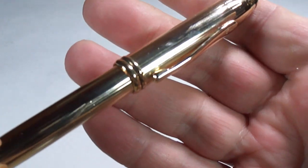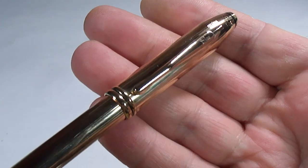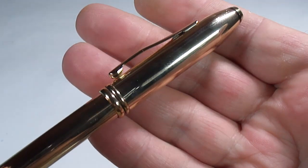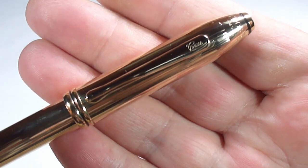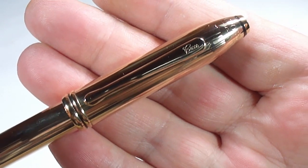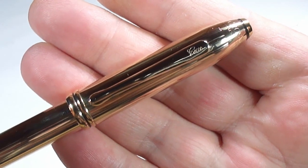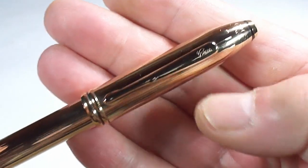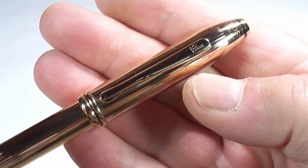We've got the very recognizable Cross clip there, and to the very top you can see the word Cross written in script. I believe this is an earlier version being written in script, because later on the pens had the word Cross in capital letters.